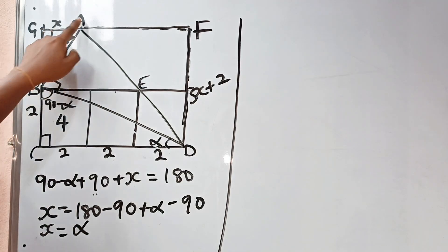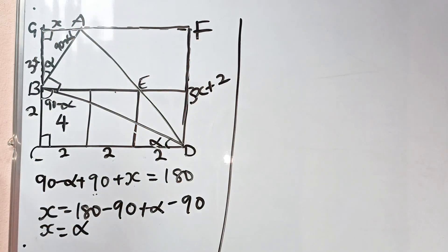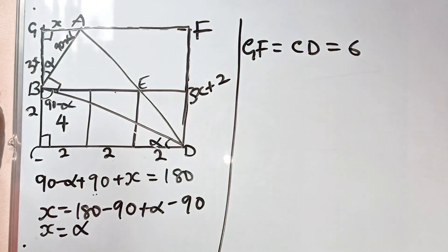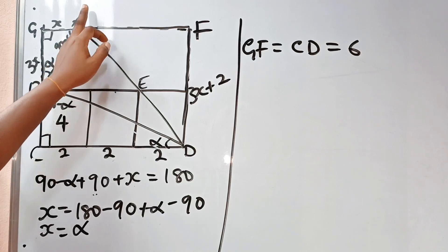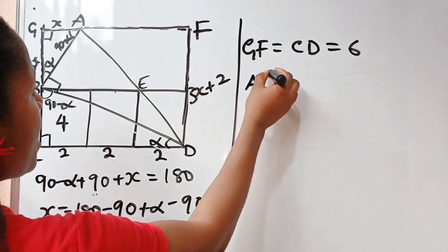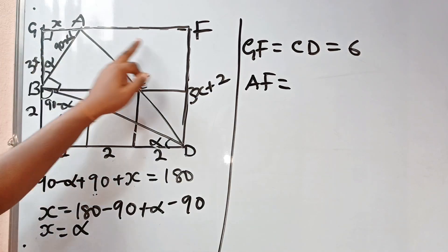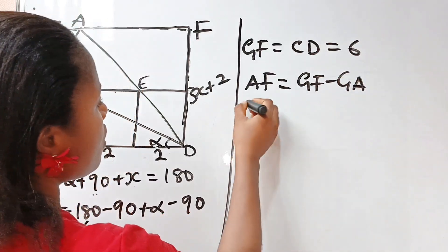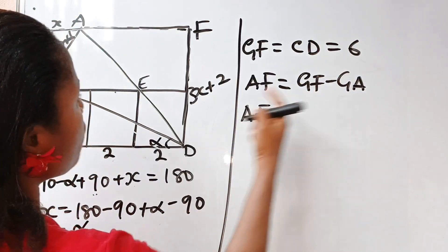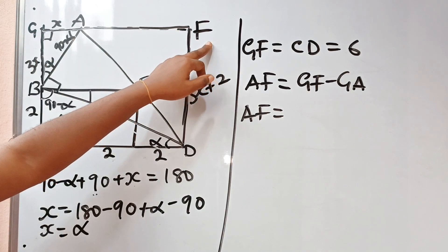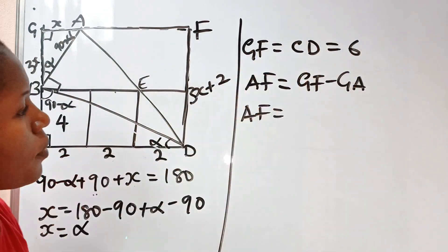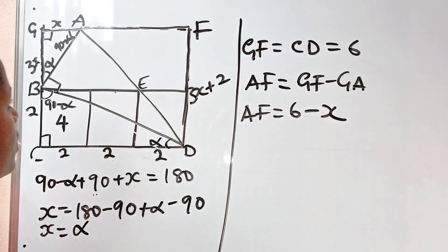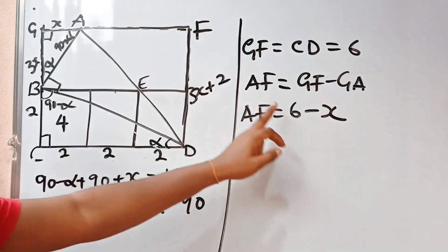Since GF equals CD, which equals 6, and GA equals X, then AF equals GF minus GA. Our GF is 6, minus GA which is X. So AF is 6 minus X.